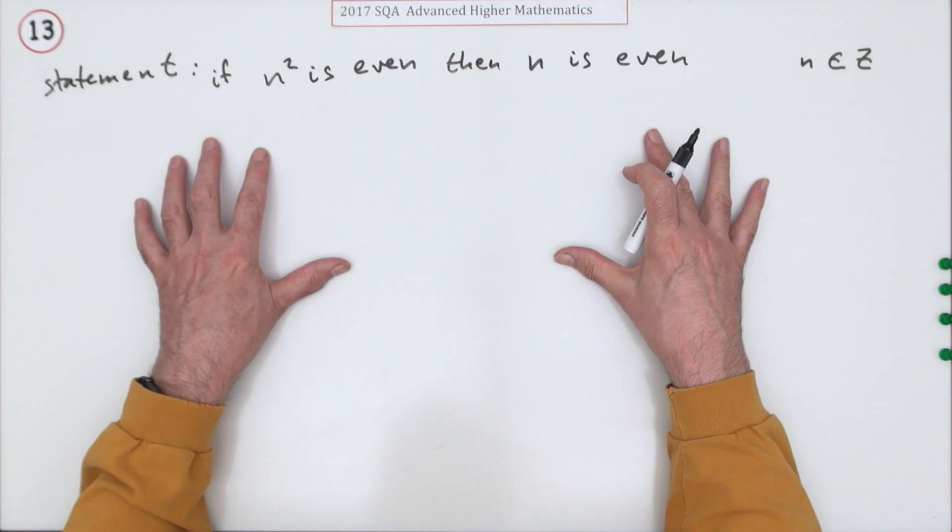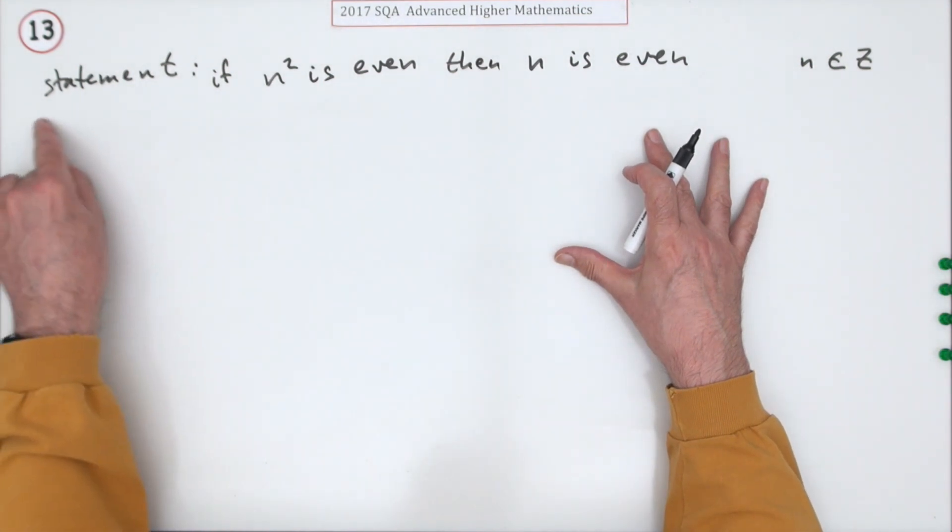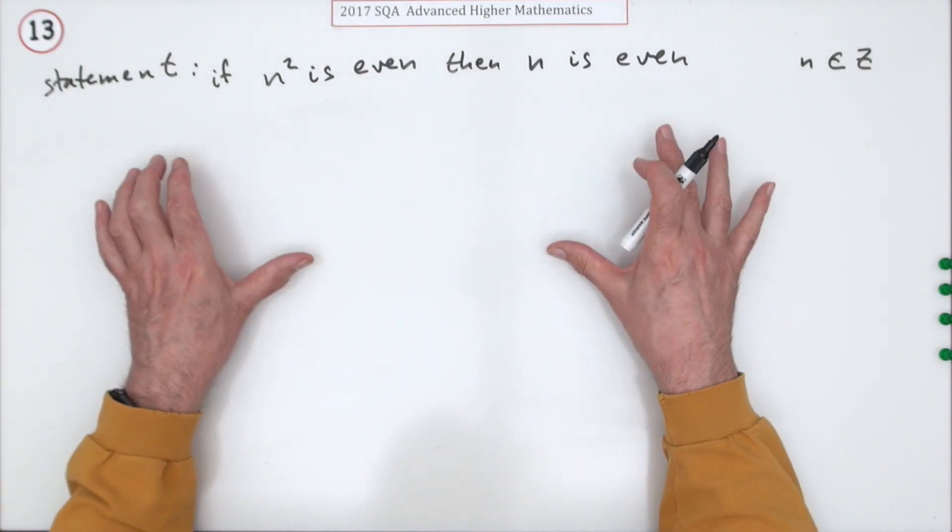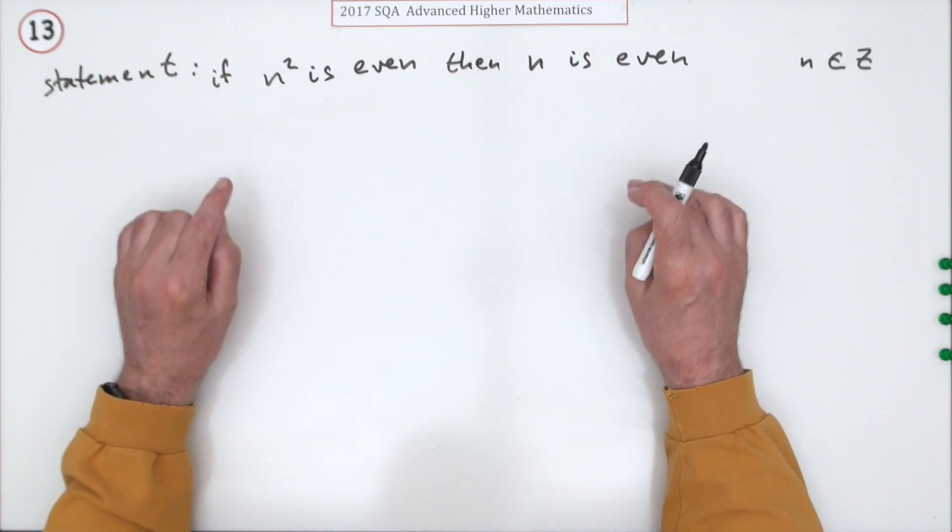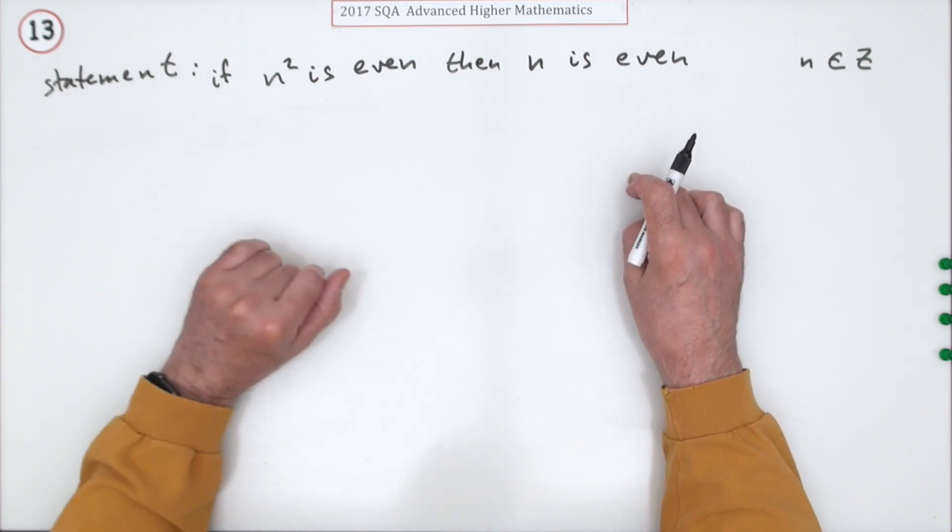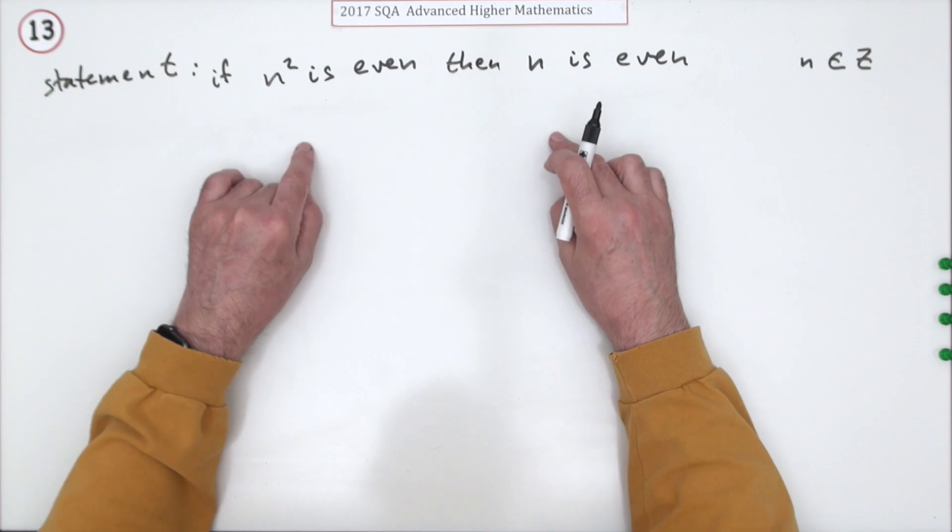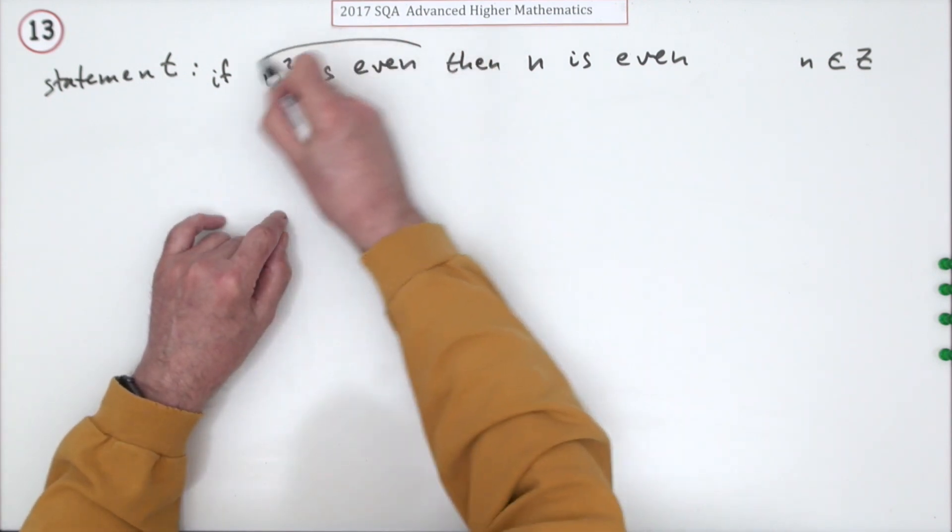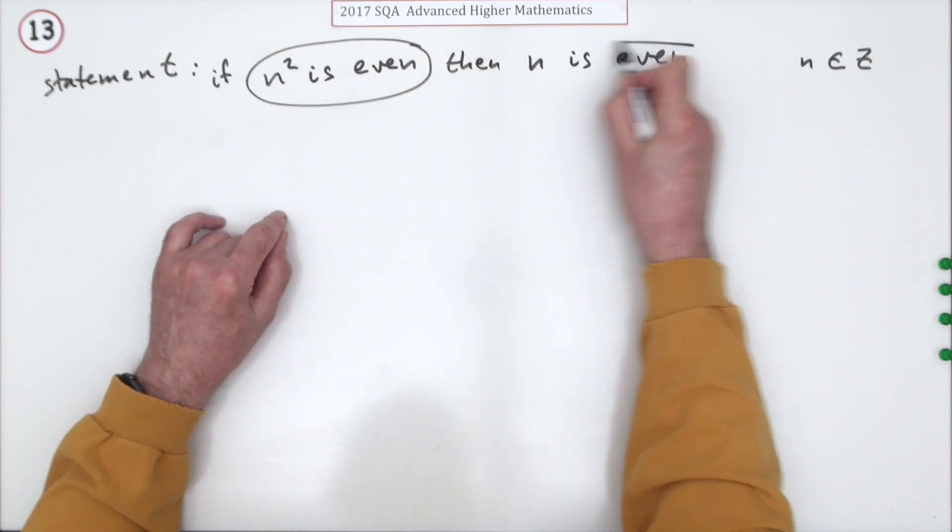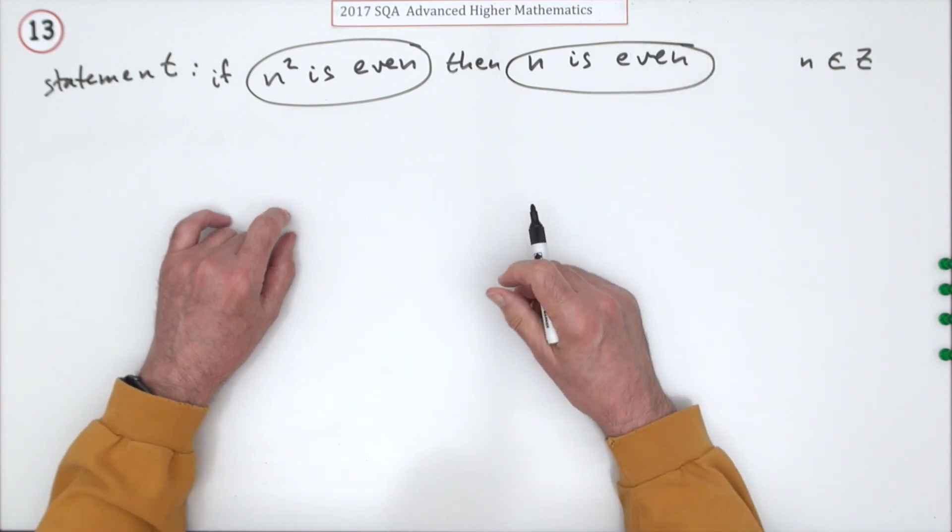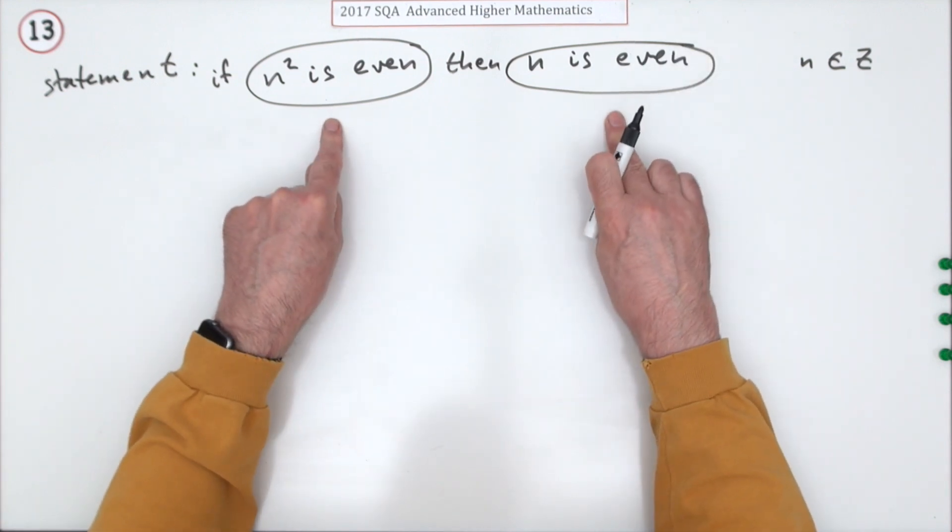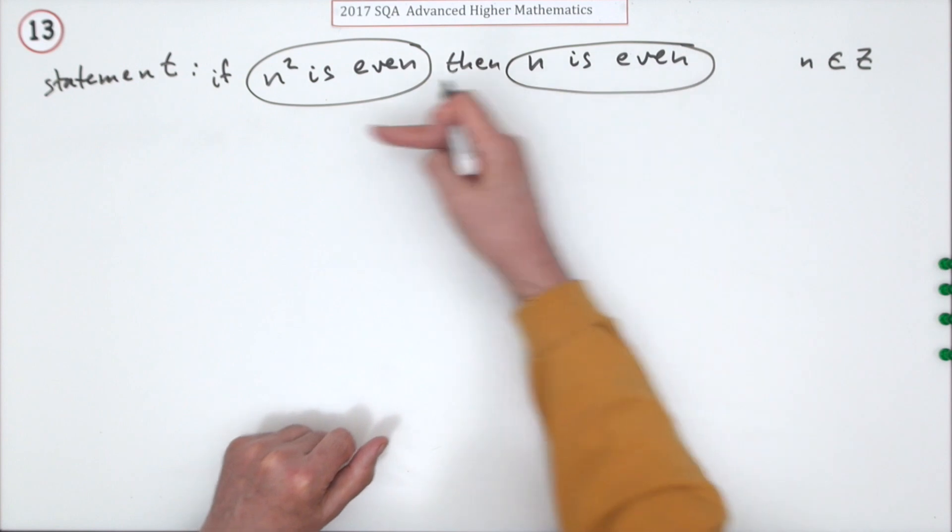Well, the contrapositive is logically equivalent to the original statement, so if you can prove the contrapositive, you've proven the original statement. You form the contrapositive by taking these two parts of the if-then statement, forming the negation of them and stating it in reverse order.